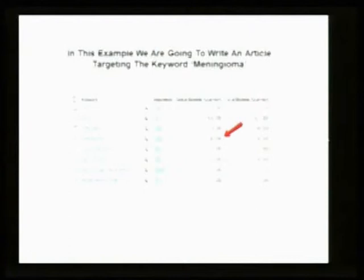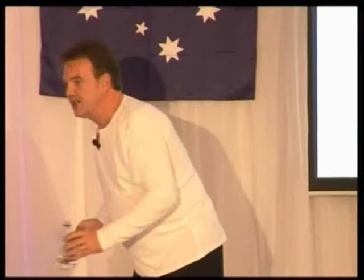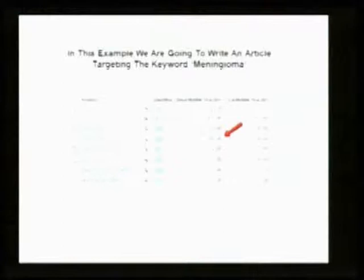In this example, we're going to look at writing an article targeting the keyword 'meningioma.' We decided we want to write an article targeting that keyword. The keyword selector tool shows you there are 90,500 people a month searching for the keyword meningioma — quite a lot, globally.